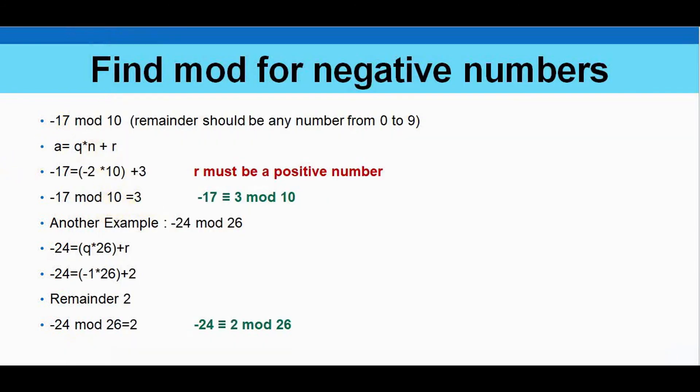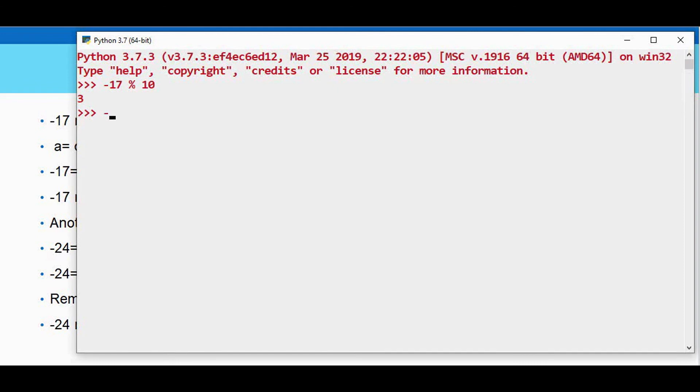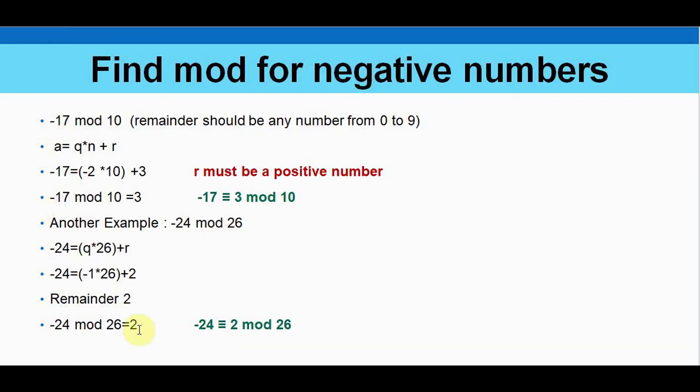Minus 17 mod 10 is 3. And check with the next example. Minus 24 mod 26. We got 2 here. So that's it.